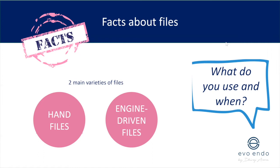Engine-driven files can only be used once an effective glide path has been created by hand files. For me, an effective glide path is a size 10 hand file that passively goes to working length — I'm not working it to length, it can passively go to full working length and be removed with minimal resistance. I don't necessarily go to a larger than size 10 glide path by hand, because the rotary systems I use have effective glide path files such as the HyFlex EDM 10/05 or 15/03 — the first number is the tip size, the second is the taper.